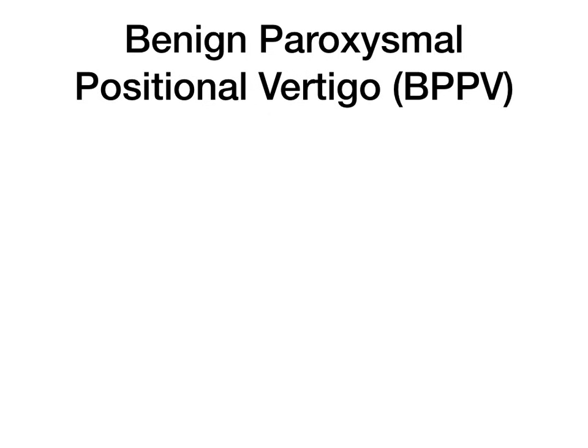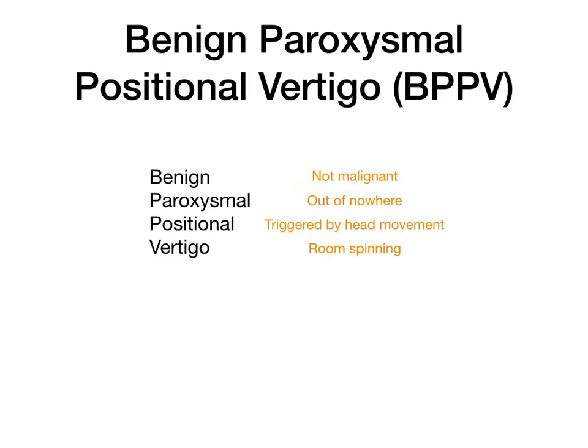Let's start with BPPV — benign paroxysmal positional vertigo. Breaking down the name: benign means it's not malignant, not a stroke — it's benign because it's peripheral. Paroxysmal means it comes on out of nowhere; these attacks truly seem to appear suddenly, often triggered by moving the head. Positional means it is triggered by positional changes in the head.